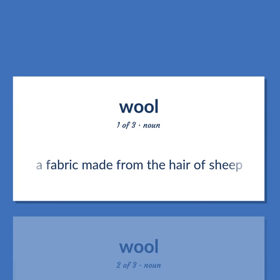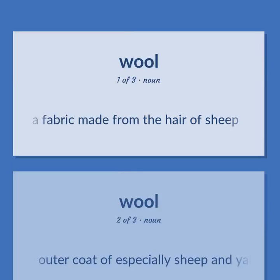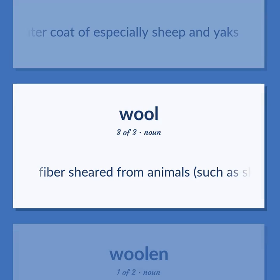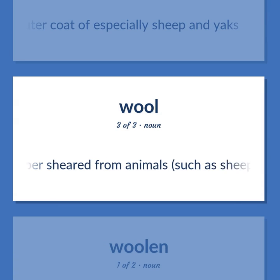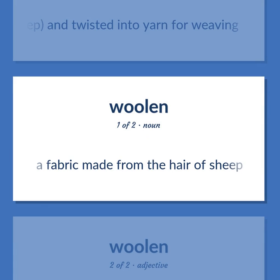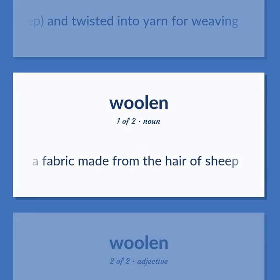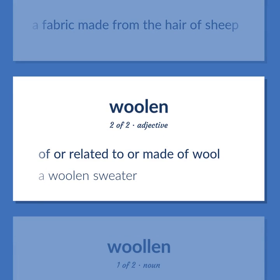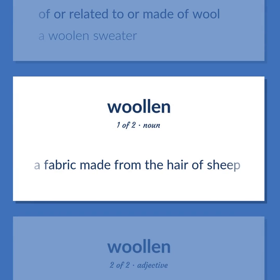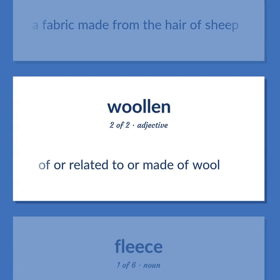Wool: A fabric made from the hair of sheep. Fiber sheared from animals, such as sheep, and twisted into yarn for weaving. Of or related to or made of wool — for example, a woolen sweater.